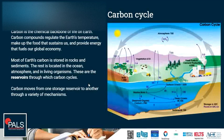The carbon cycle. Carbon is the chemical backbone of life on Earth. Carbon compounds regulate the Earth's temperature, make up the food that sustains us, and provide energy that fuels our global economy. Most of Earth's carbon is stored in rocks and sediments. The rest is located in the ocean, atmosphere, and living organisms — these are the reservoirs through which carbon cycles. Carbon moves from one reservoir to another through a variety of mechanisms called fluxes.